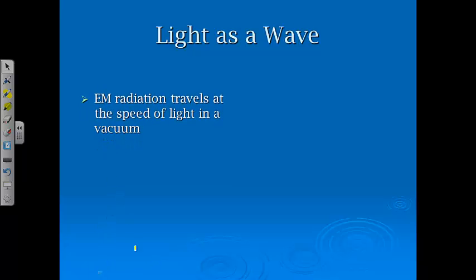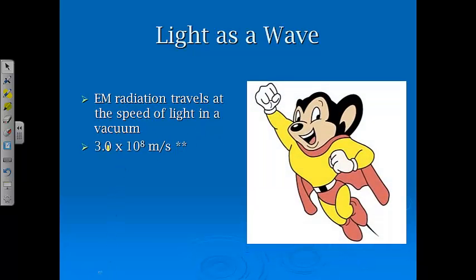Continuing with light as a wave, all electromagnetic radiation travels at the speed of light in a vacuum, and that speed is 3.0 times 10 to the 8th meters per second. You guys may not remember, but this is Mighty Mouse, who was supposed to travel at the speed of light. When we say vacuum, it's not talking about the appliance in your house. It's just talking about an area of space that's devoid of any other matter. That's how fast the speed of light will travel, and that's going to be important.